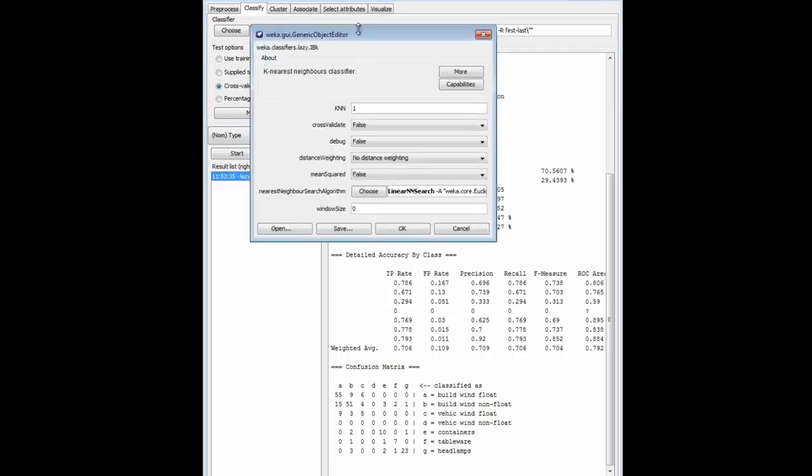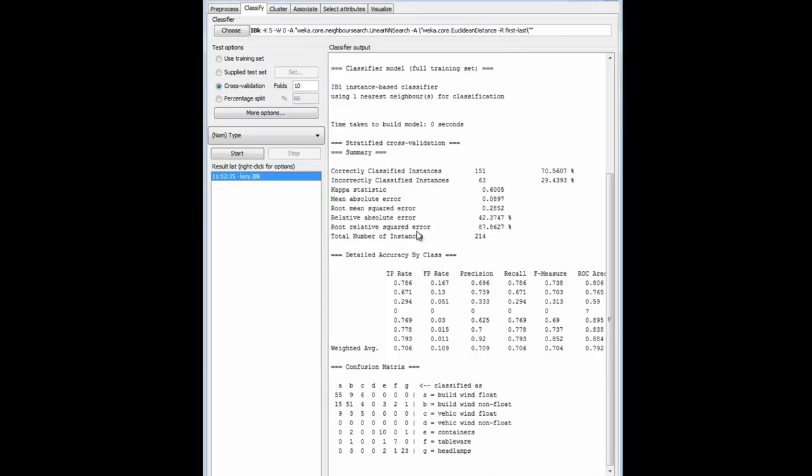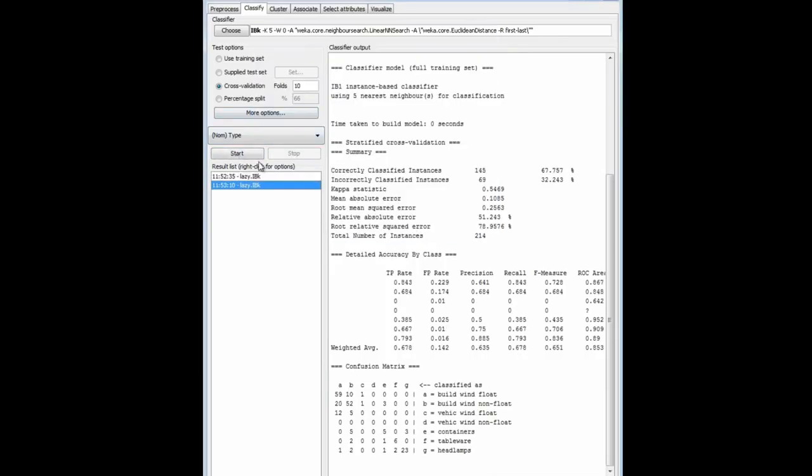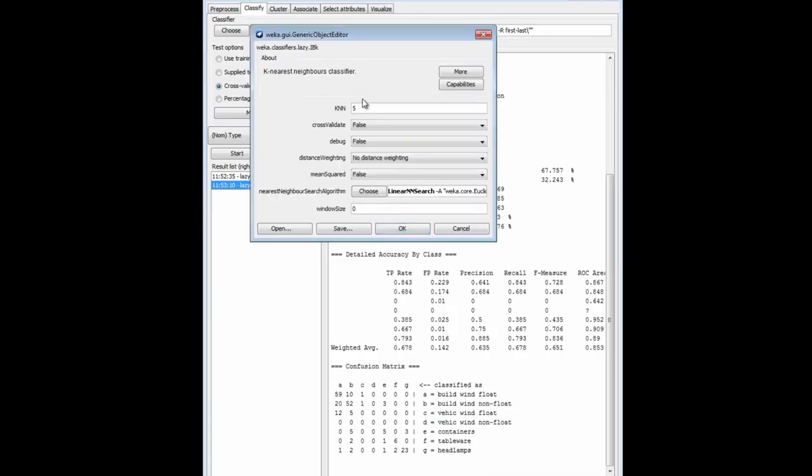Let's change the value of k. This knn, this k value here, is set by default to 1, the number of neighbors to use. We'll change that to, say, 5, and run that. In this case, we get a slightly worse result, 67.8%, with k as 5. This is not such a noisy data set, I guess.